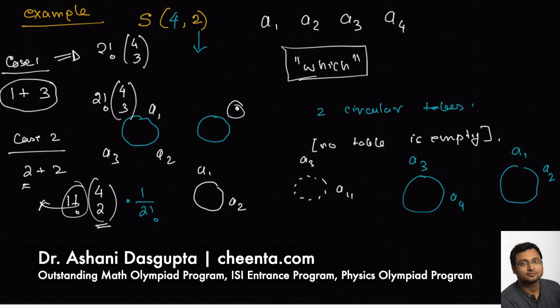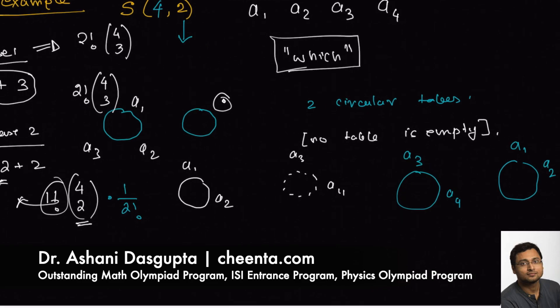Because every time you choose two objects you do not get a different case since the tables are indistinguishable. So the final answer S(4,2) is 2! × (4 choose 3) + (1/2!) × (4 choose 2), which equals 8 + 3 = 11. So S(4,2) turns out to be 11.